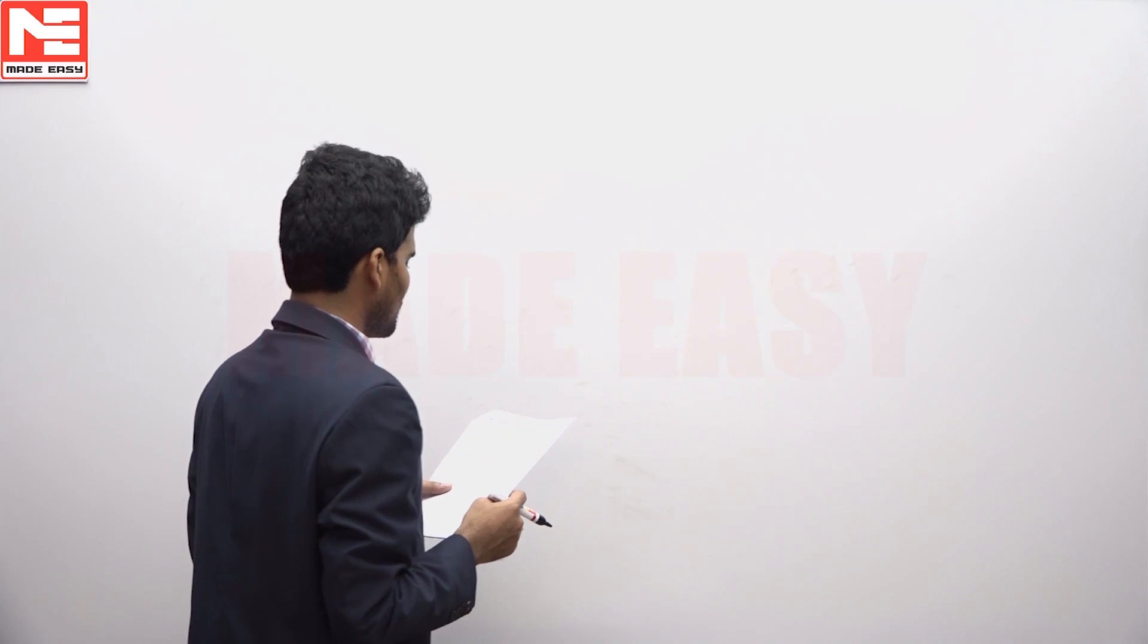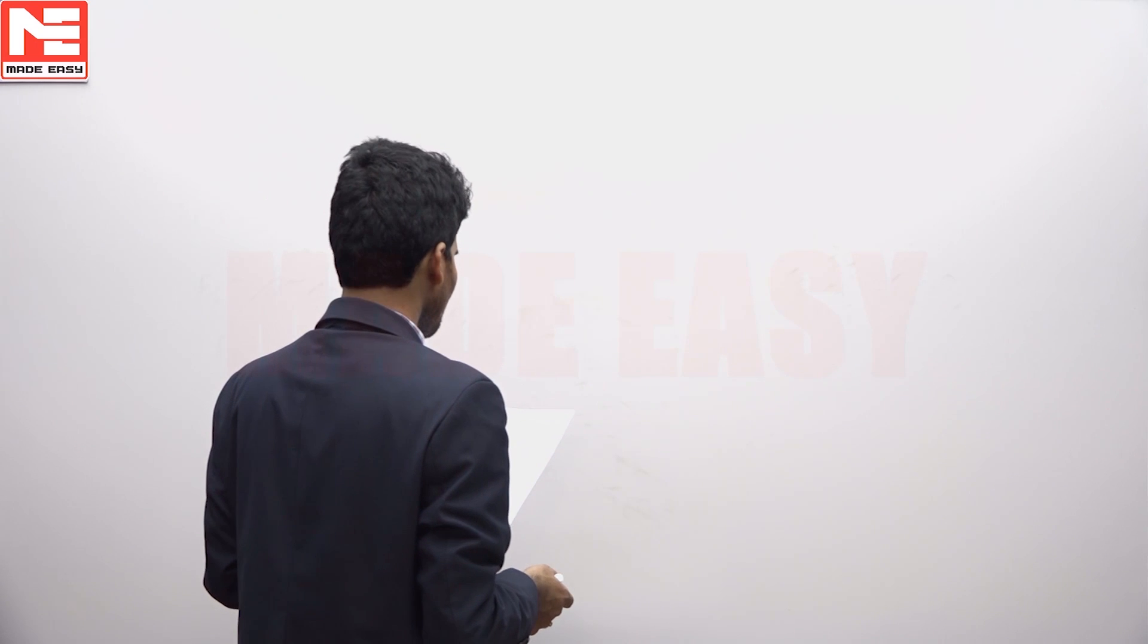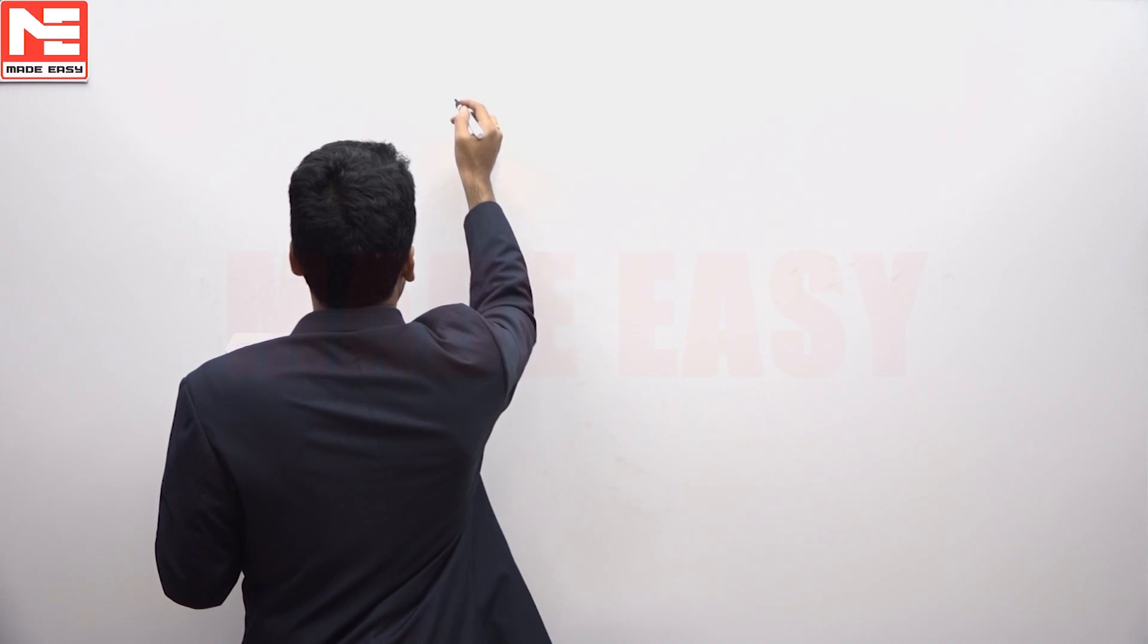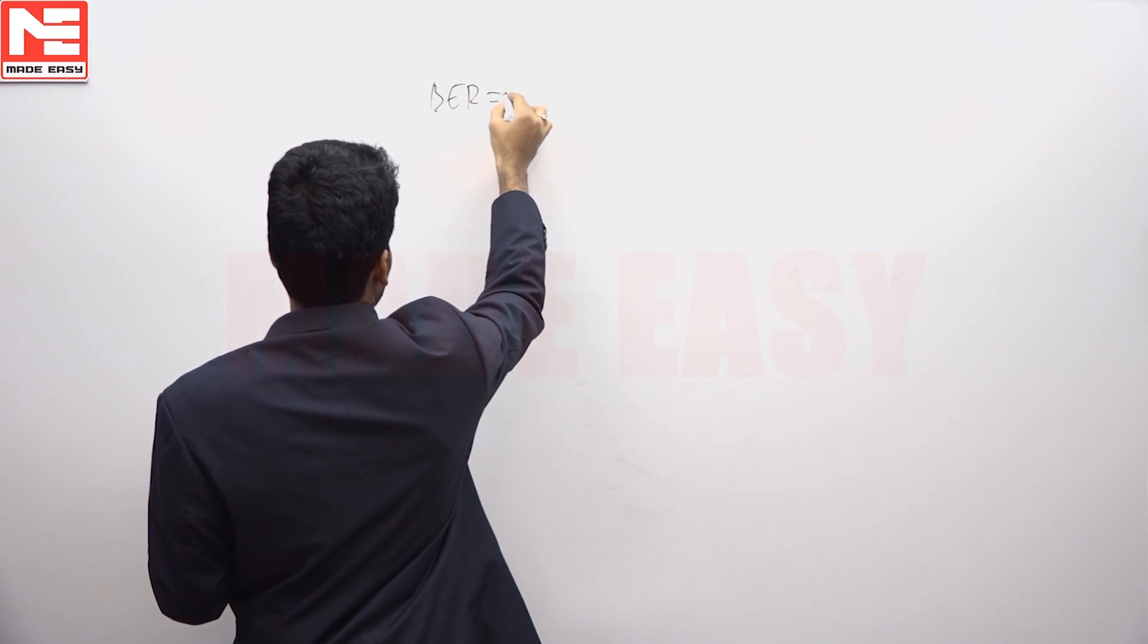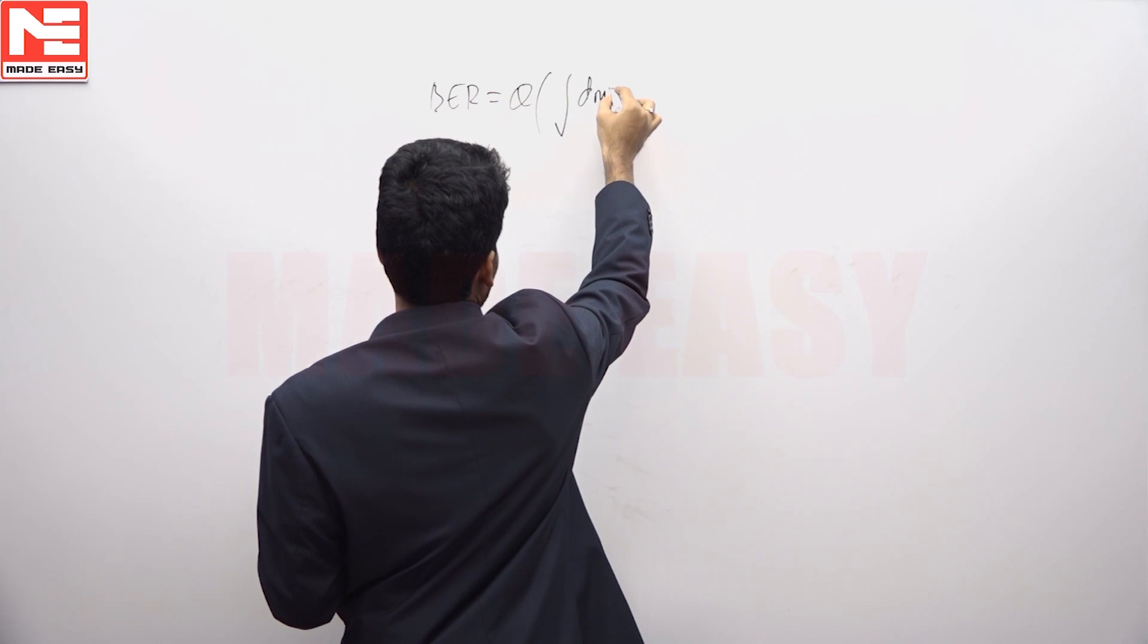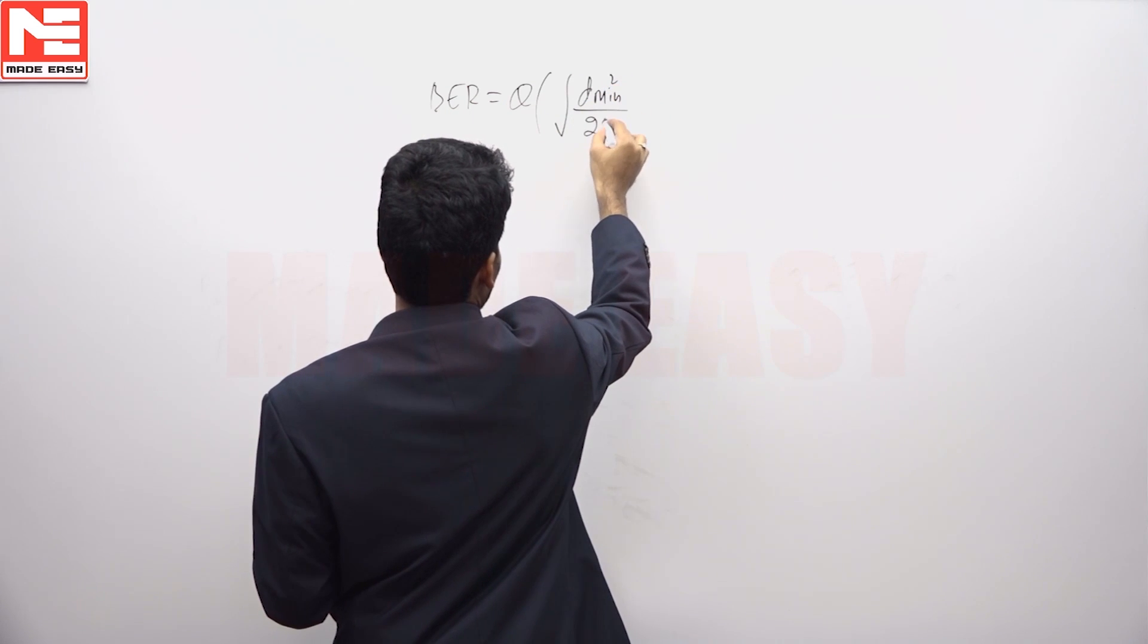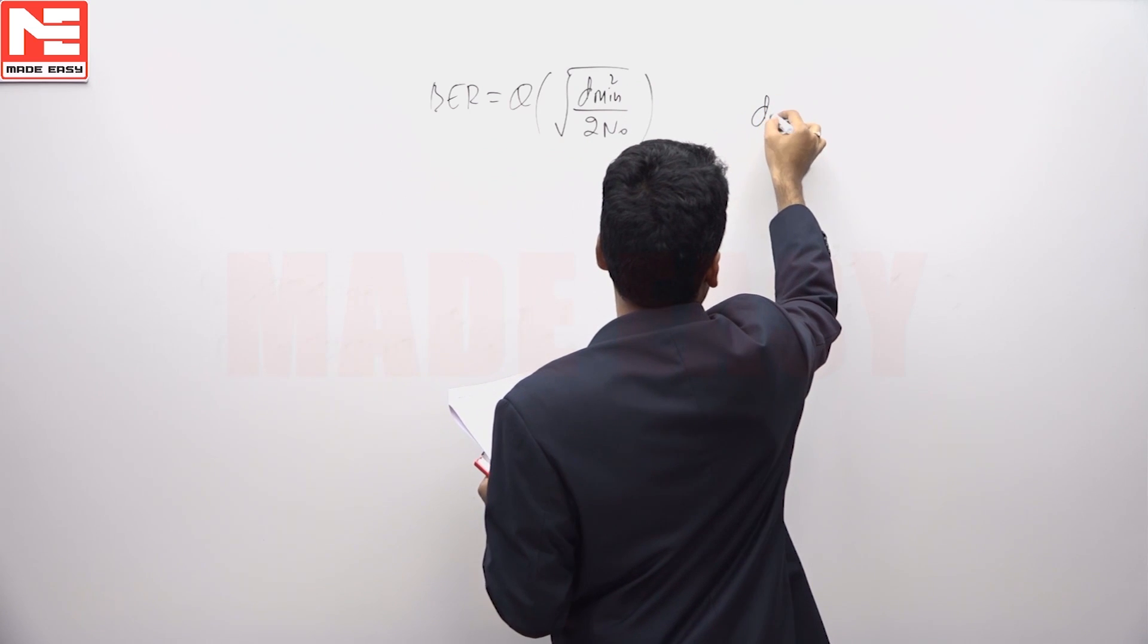Here QPSK and BPSK systems are given having different average bit energies. The bit error rate of MRA signaling can be written as Q of square root of D min squared by 2N0, where D min is given by 2 root ES sin pi by M.